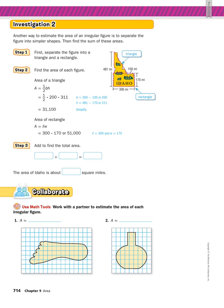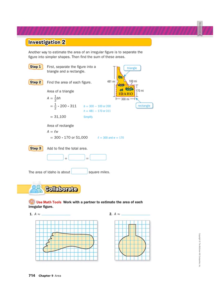Moving to the next page, I'll show you another trick for when you're not dealing with grid paper. Investigation two uses the state of Idaho. Another way to estimate the area of an irregular figure is to separate it into simpler shapes, then find the sum of those areas. Idaho is a really weird-looking shape.